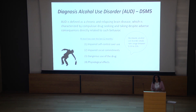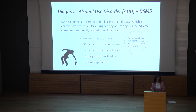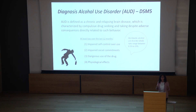How do we define an alcoholic? The DSM-5 defines alcoholism as a chronic and relapsing brain disease, which is characterized by compulsive drug seeking and taking despite adverse consequences directly related to this behavior. So I don't care anymore if it costs a lot of money, if it's hard to get, if it's the middle of the day — I will do it anyway.